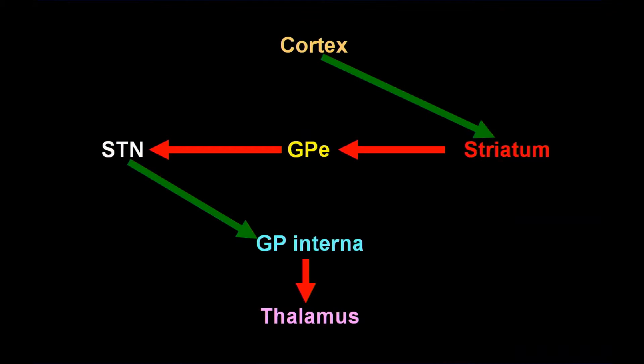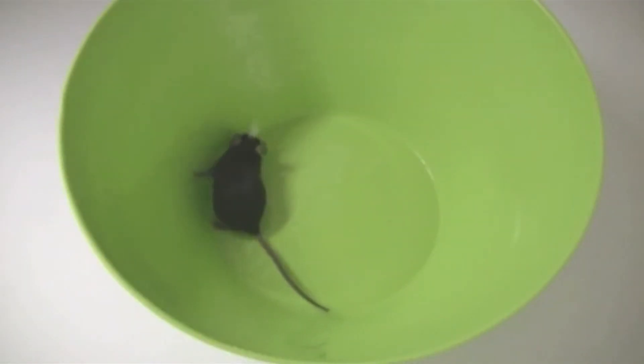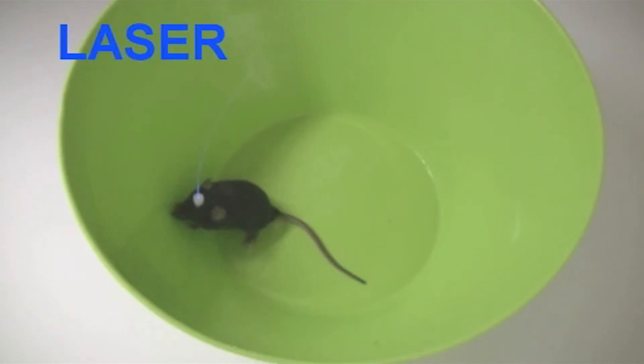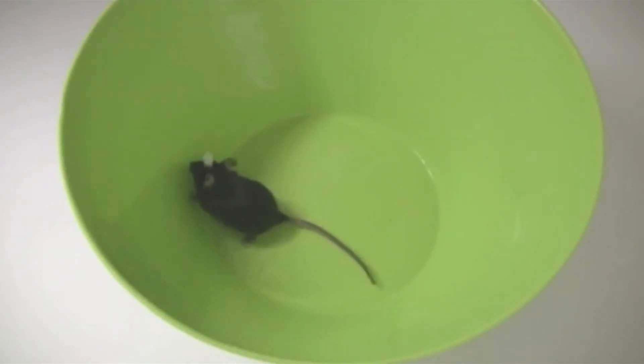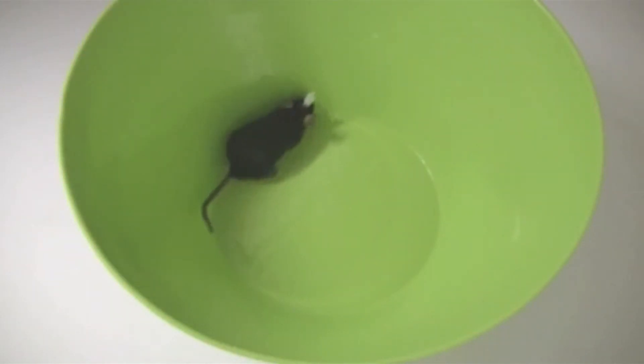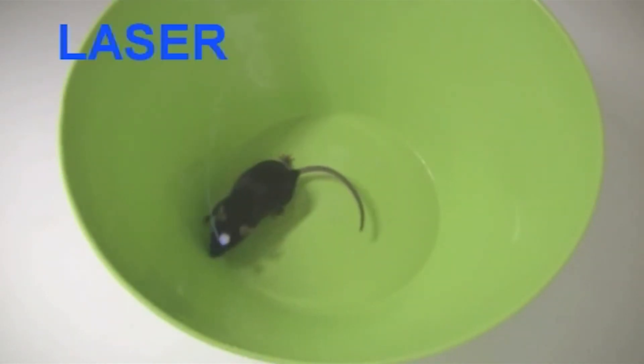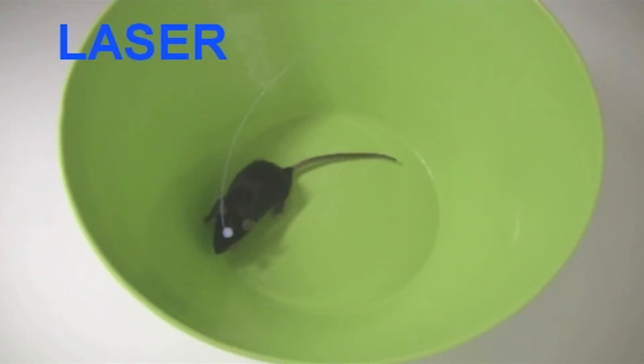Here's a rat in its little green world. The laser has just turned on its indirect pathway — the laser comes off and he starts to move around a bit — and we'll turn the laser back on and he stops. So activation of the indirect pathway gives rise to a cessation of movement.